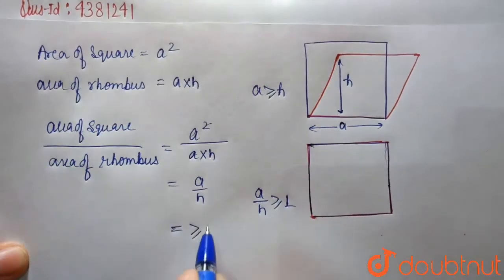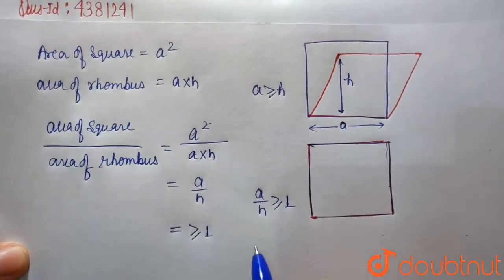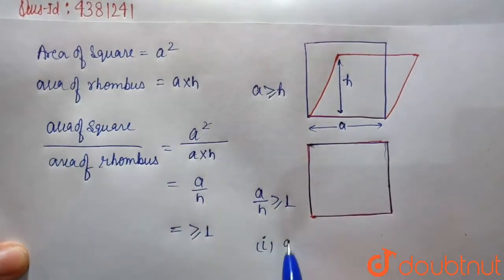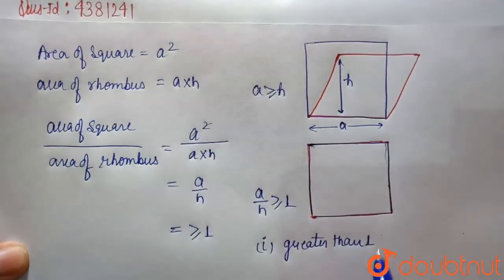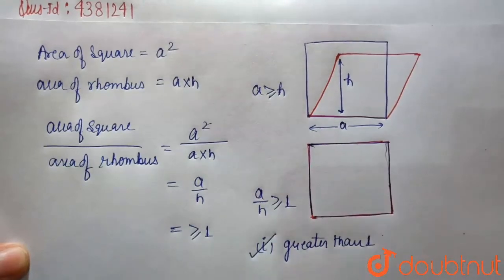So this is our answer. This is always greater than 1, meaning option 1 is correct. Always greater than 1 is the right option. Thank you.